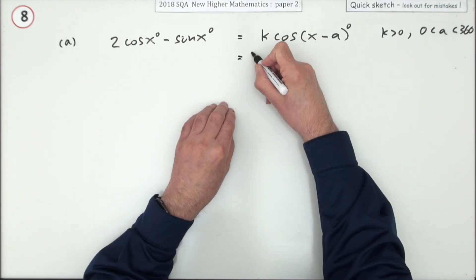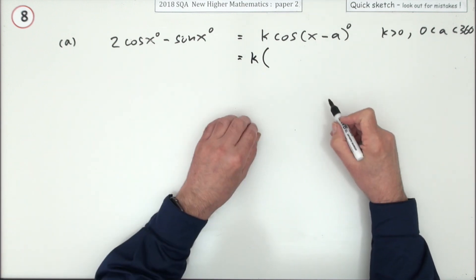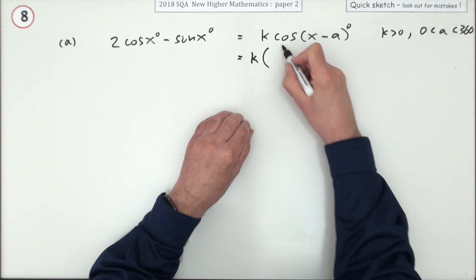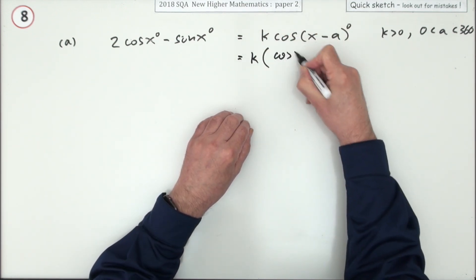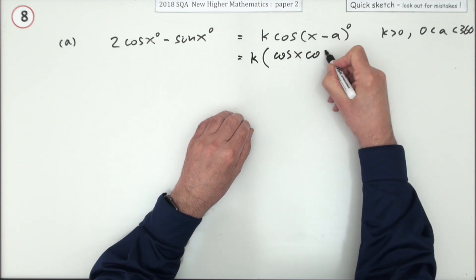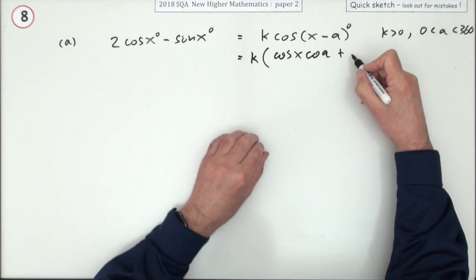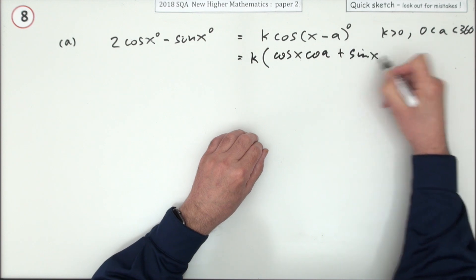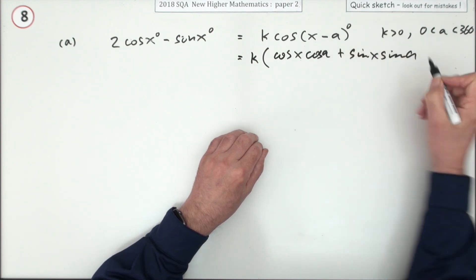They only allow you to do it one way, which is to use the expansion. Keep k outside for now. Cosine out the front — that's cos x · cos a — and notice it changes to a plus, with the sine reversed on the front: sine x · sine a.